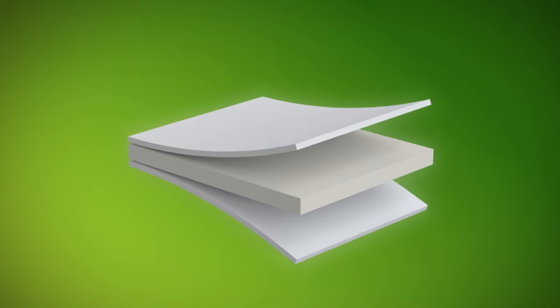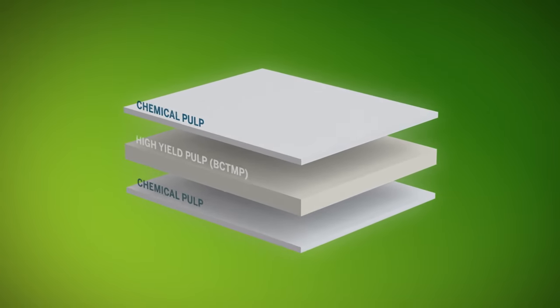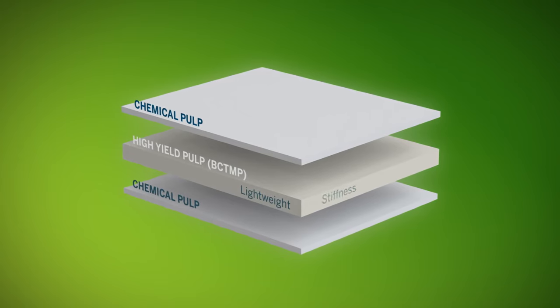Metza board folding box boards have a three-layer structure that makes them lightweight, stiff and bright.